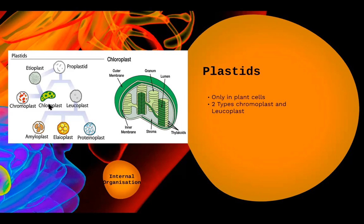Chloroplast is very important — not just because it imparts green color, but because it helps in photosynthesis. Photosynthesis is the process by which the sun's energy is captured by the plant and converted into chemical energy. Because chloroplast performs this special function, it has a very special structure as well.